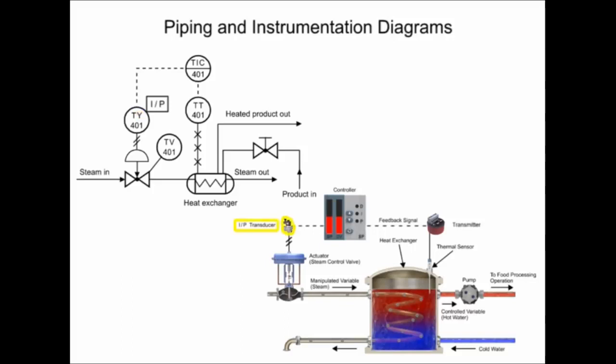The transducer converts an electronic signal to a pressure signal and is indicated by the square containing the letters I and P. The line with diagonal marks designates a pneumatic connection.